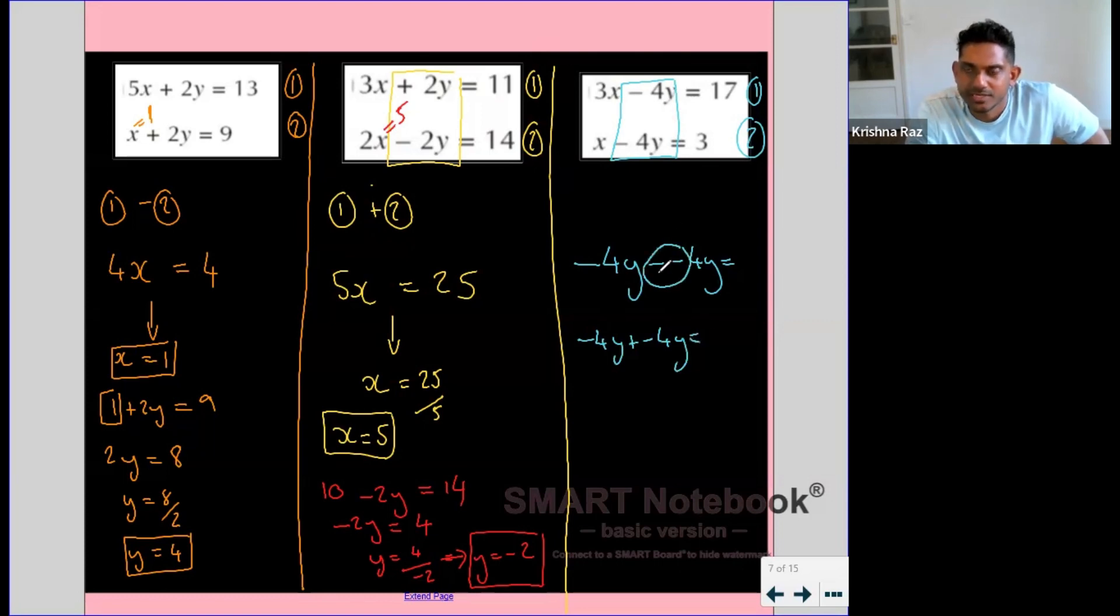So if we subtract, we get 2 minuses making a plus, so we get minus 4y plus 4y, which is 0. If we added, we would have got negative 8y. So again here, we will have to subtract the equations.